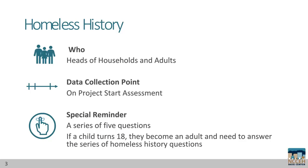Homeless history is different from many other data elements because it is a series of five questions. Since children become adults when they turn 18, any client turning 18 in your project will need responses for this question as of their entry date. If a 17-year-old enters your permanent housing project, consider collecting their responses from the start.